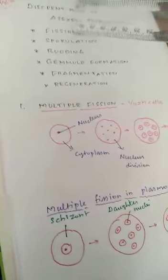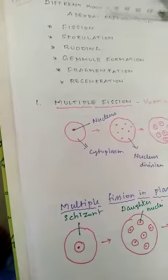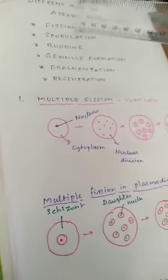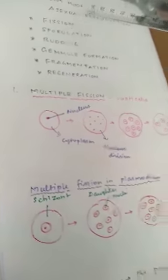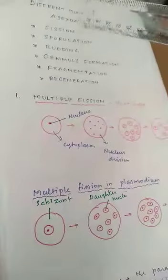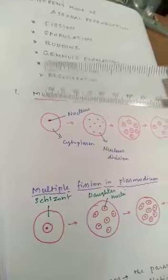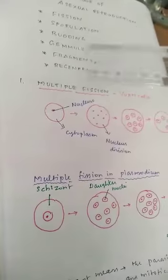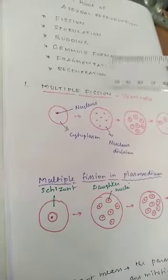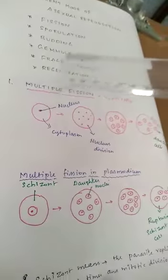The first one is Fission. Fission is of two types: one is Multiple Fission, and another one is Binary Fission. We already know Binary Fission. Today we are studying about Multiple Fission. Multi means many, Fission means division — one cell is divided into many cells. These are called Multiple Fission.